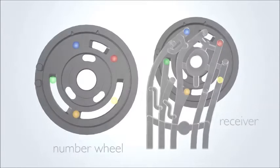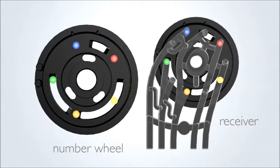Five sending and receiving light paths are located on opposite sides of each number wheel and are aligned with the slots.